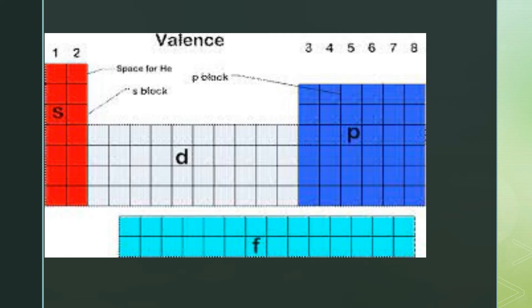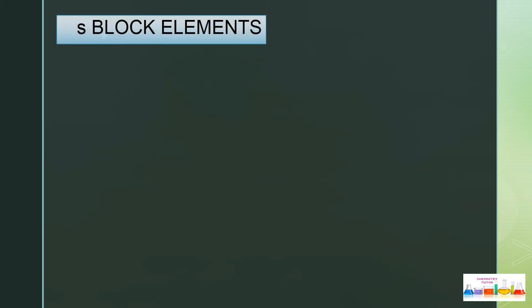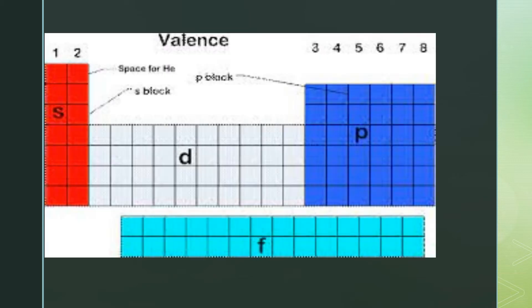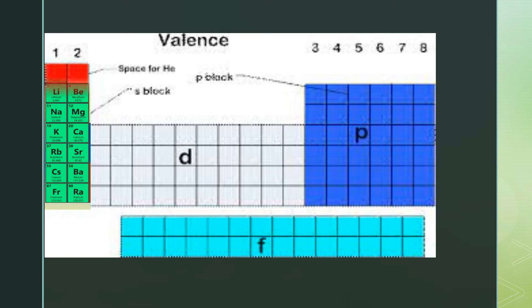Let's see why they are known as S, P, D, and F block elements. S block elements are those elements in which the last electron enters the outermost S subshell. By definition, the last electron will enter the S subshell. The Group 1A and 2A elements are known as S block elements.